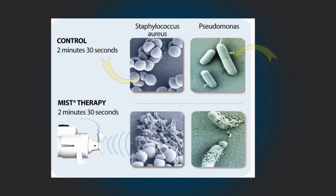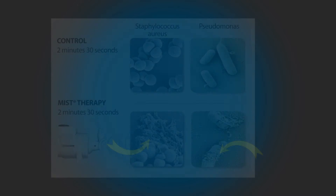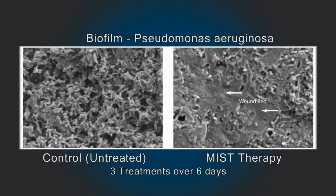Unlike other cells, bacterial cells have a rigid cell membrane. The mechanical stress caused by the sound waves pressing on the bacterial membranes alters permeability of the bacteria, which results in cell death. In addition, these sound waves have been shown to disrupt biofilm. The overall result is a decrease in the bacteria load and removal of a common barrier to healing.